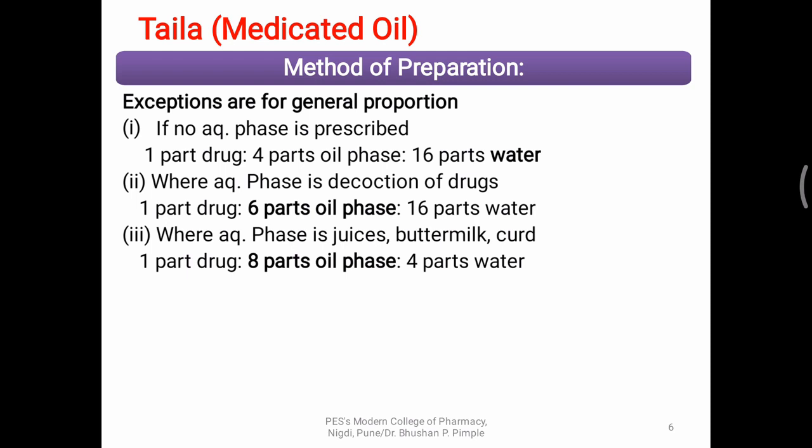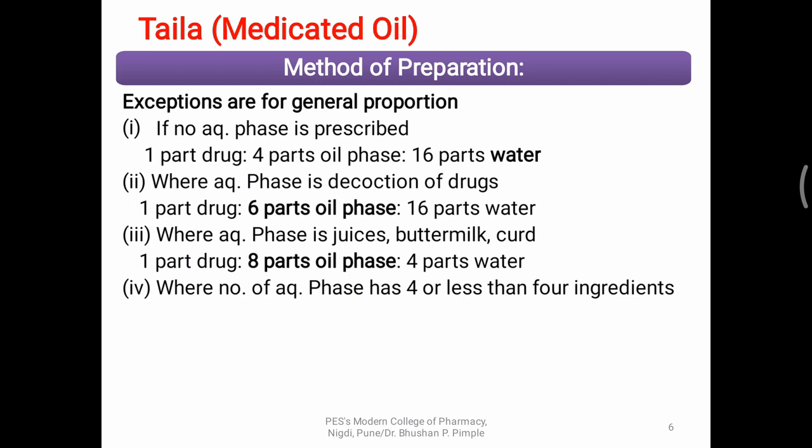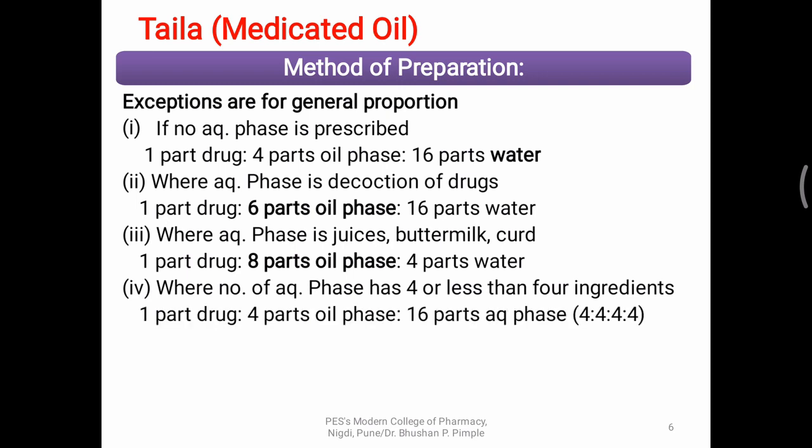When the aqueous paste is reduced completely, this third category is specifically used to prepare an emulsion. When no aqueous paste or the number of aqueous phases are four or less — for example, buttermilk, water, and plant juices making three aqueous phases — the formula is one part drug, four parts oil, and sixteen parts aqueous paste total, with each phase divided equally. If there are four phases, four parts each; if there are three, twelve parts total — four parts each.